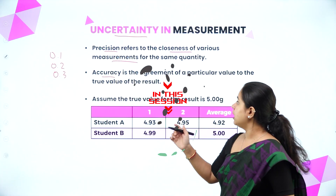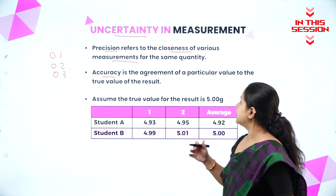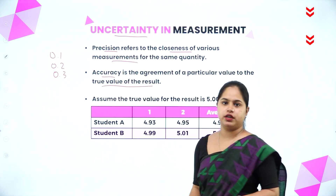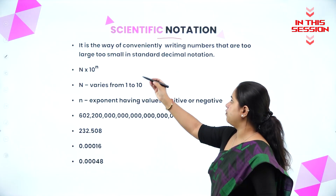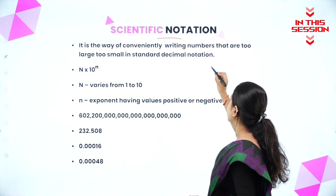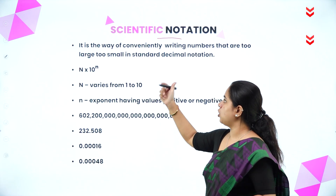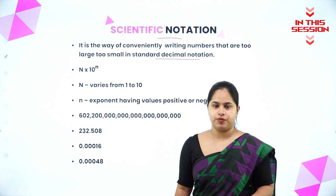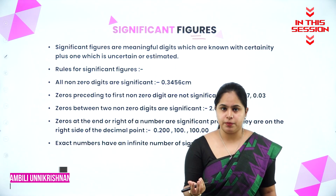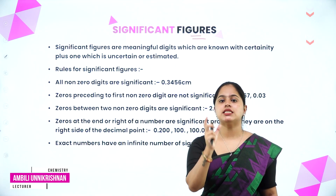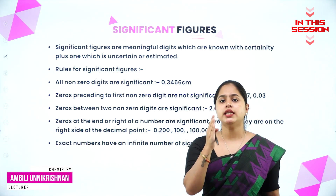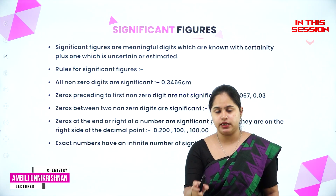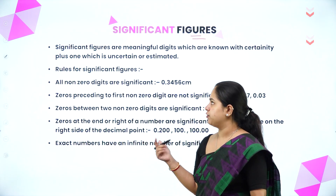What is accuracy then? Accuracy is the agreement of a particular value to the true value of the result. Scientific notation is a way of conveniently writing numbers that are too large or too small in standard decimal notation. Significant figures means in scientific notation how many numbers you can tell are certain — that is said to be significant figures.